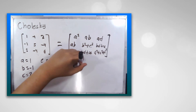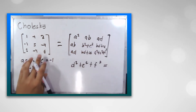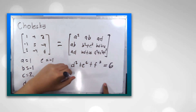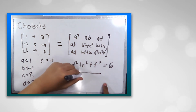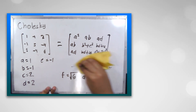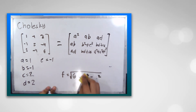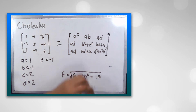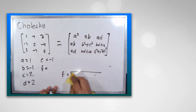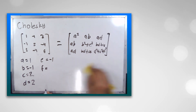For the last value, d squared plus e squared plus f squared is equal to 6. Rearranging, f is equal to the square root of 6 minus d squared minus e squared. D and E are 2 and negative 1 respectively. So 6 minus 4 is 2, minus 1 is 1. We now have the square root of 1, and the square root of 1 is also 1. So f is equal to 1.